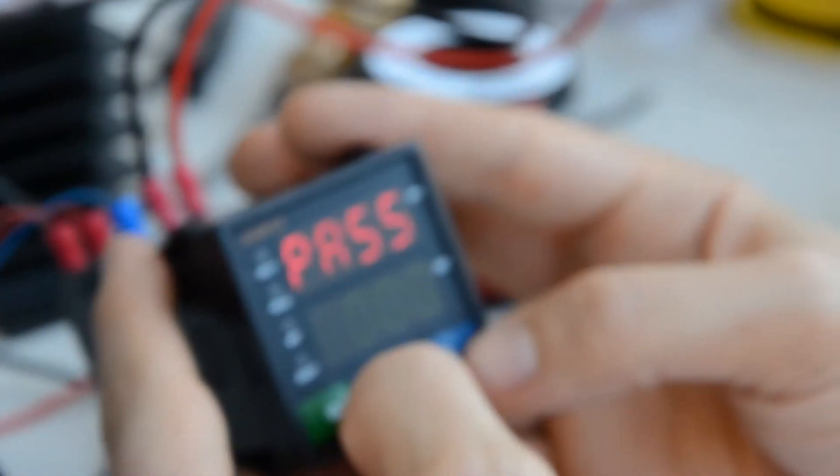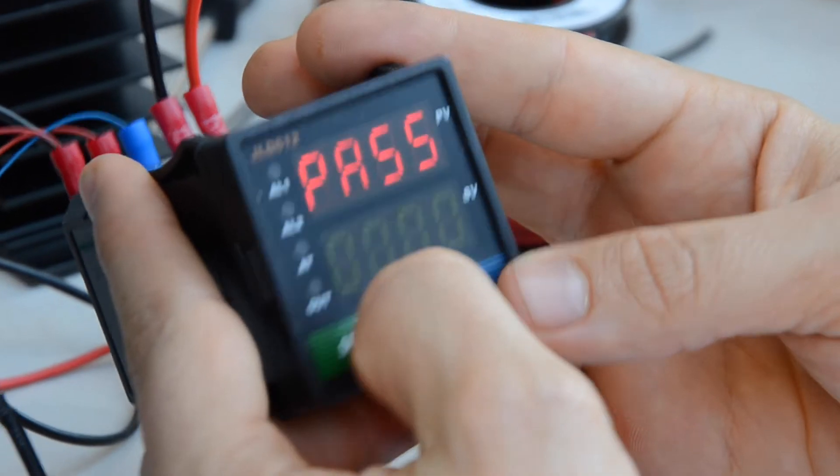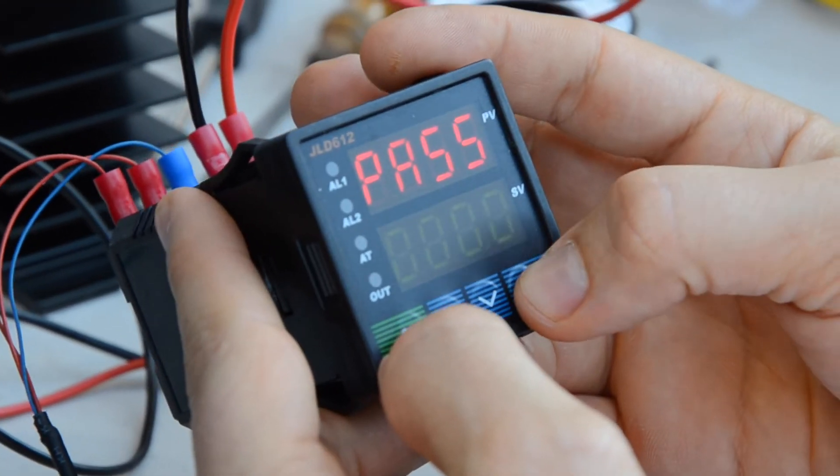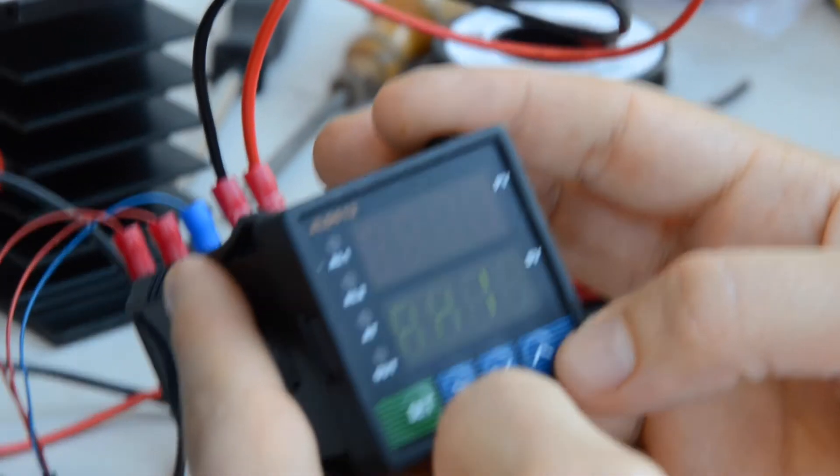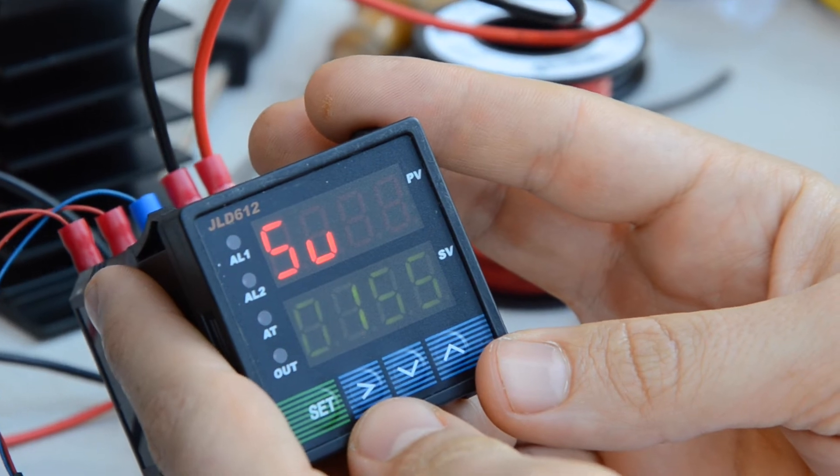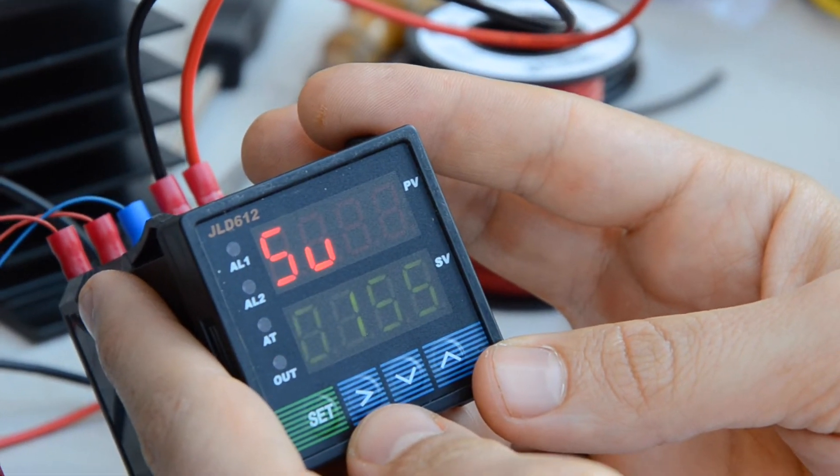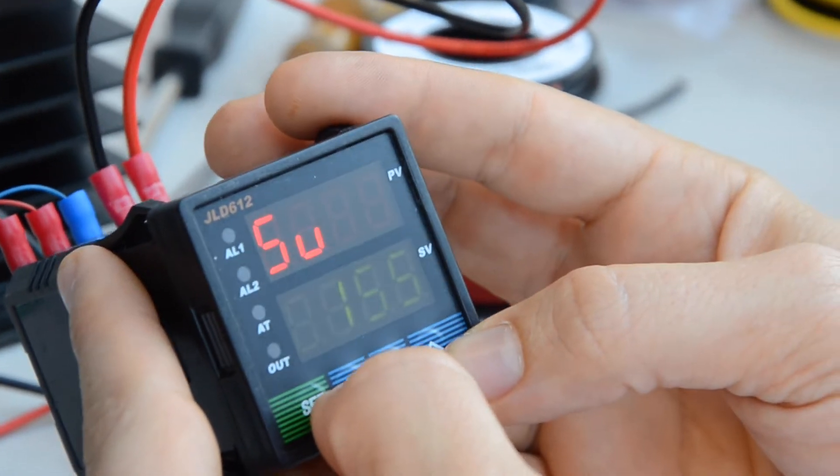The next setting we're going to do is for high and low alarms in our set value. And that, we want to enter the code 0001. The first setting is our set value. That's what the SU is. We set that. We're going for 155 for our steeping temperature for our initial step in our brewing process.